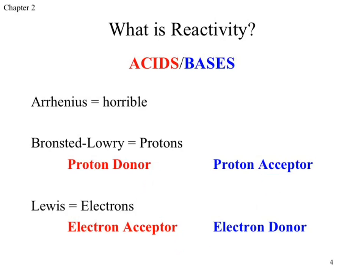Lewis acids and bases — for some reason in organic chemistry we don't like referencing them as Lewis acids and Lewis bases. We use different phrases: we're looking at electrophiles and nucleophiles. Let's break those names down. 'Electro' sounds like electrons; 'phile' means like — so an electrophile is something that likes electrons. What charge would a species be that liked electrons? Positive. What charge was our H⁺? Positive.